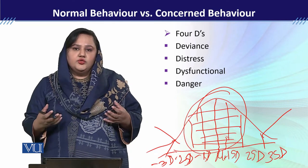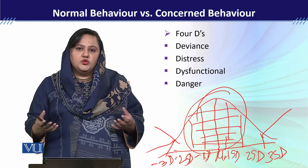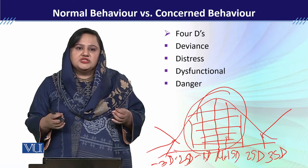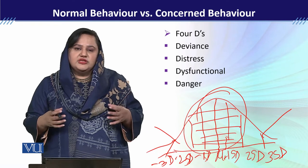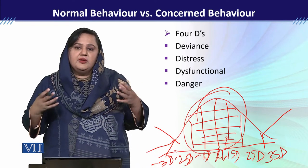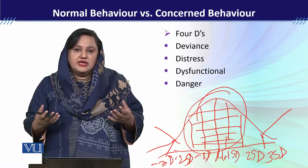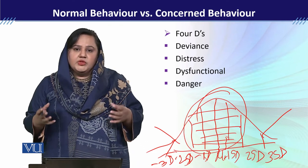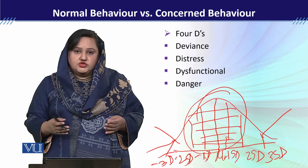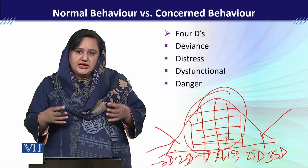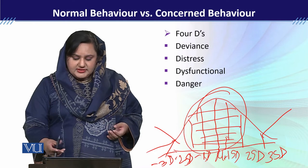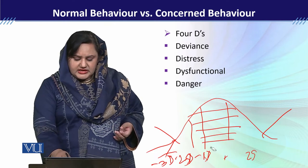اسی طرح، اگر چار لوگ کمرے میں بیٹھے ہیں اور انہیں وہی لوگ نظر آ رہے ہیں جو exist کر رہے ہیں، لیکن ایک شخص کہتا ہے کہ اسے کوئی اور شکل نظر آ رہی ہے — تو وہ deviant behavior show کر رہا ہے۔ یہ visual hallucinations ہیں۔ Deviance یہ express کرتی ہے کہ individual آپ کا normal behavior exhibit نہیں کر رہا۔